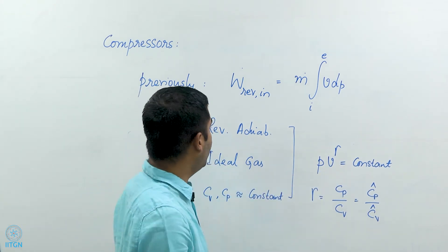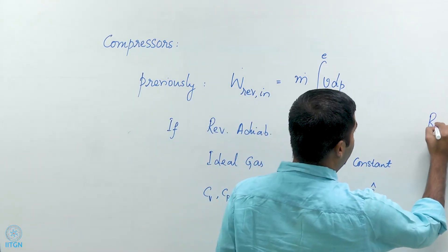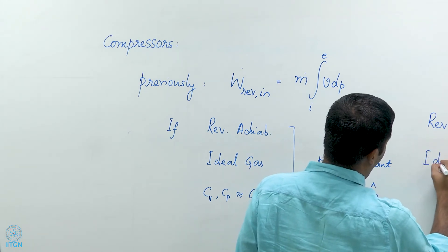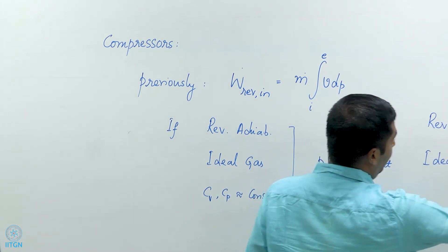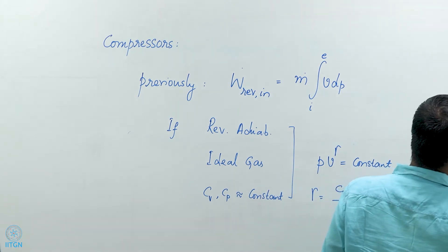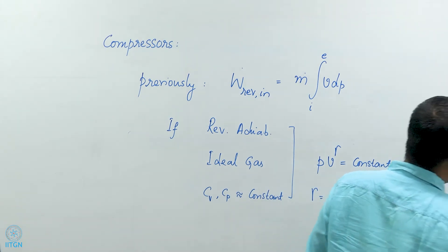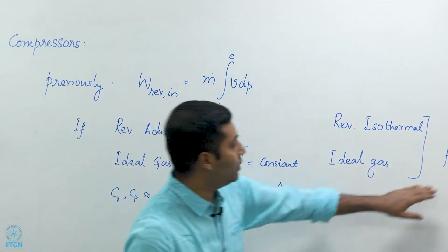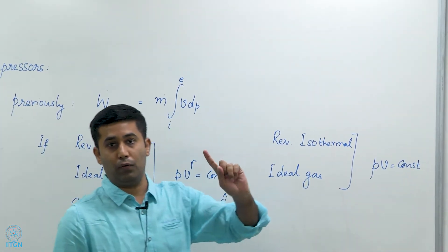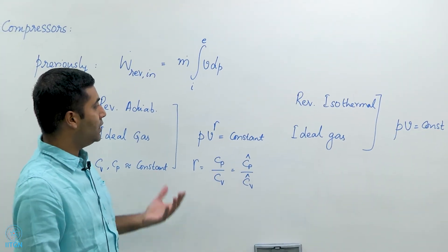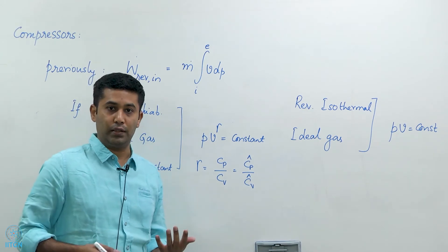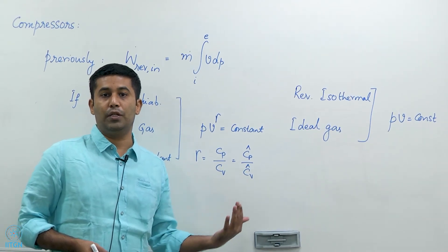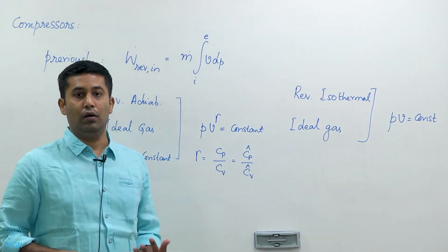On the other hand, if we have a reversible isothermal compression of an ideal gas, we can write P times V equals constant. So for the isentropic case we have PV^γ equals constant, and for the isothermal case we have PV^1 equals constant. On a P-V diagram, when we compress from a given pressure P1 to another pressure P2, these two processes appear differently.